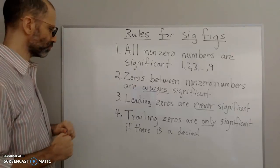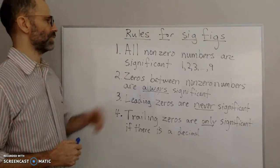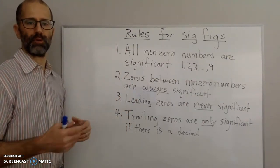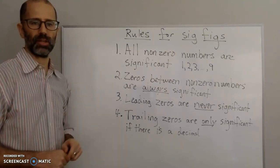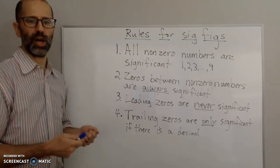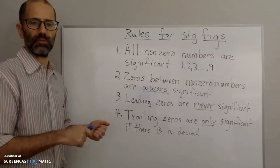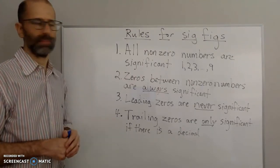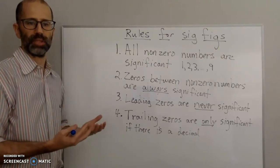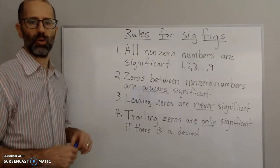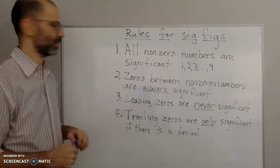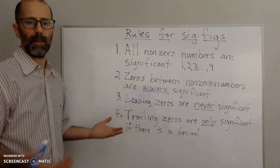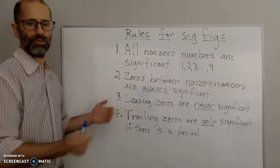So the first rule is that all non-zero numbers are significant. These rules apply if you're given a number and asked how many sig figs are in it. If you're actually doing the measurement yourself, you should already know how many sig figs. I went over that in a previous video on measurement and sig figs. These rules are for when someone gives you a measurement and asks how many sig figs it has — then you use the rules to figure it out.